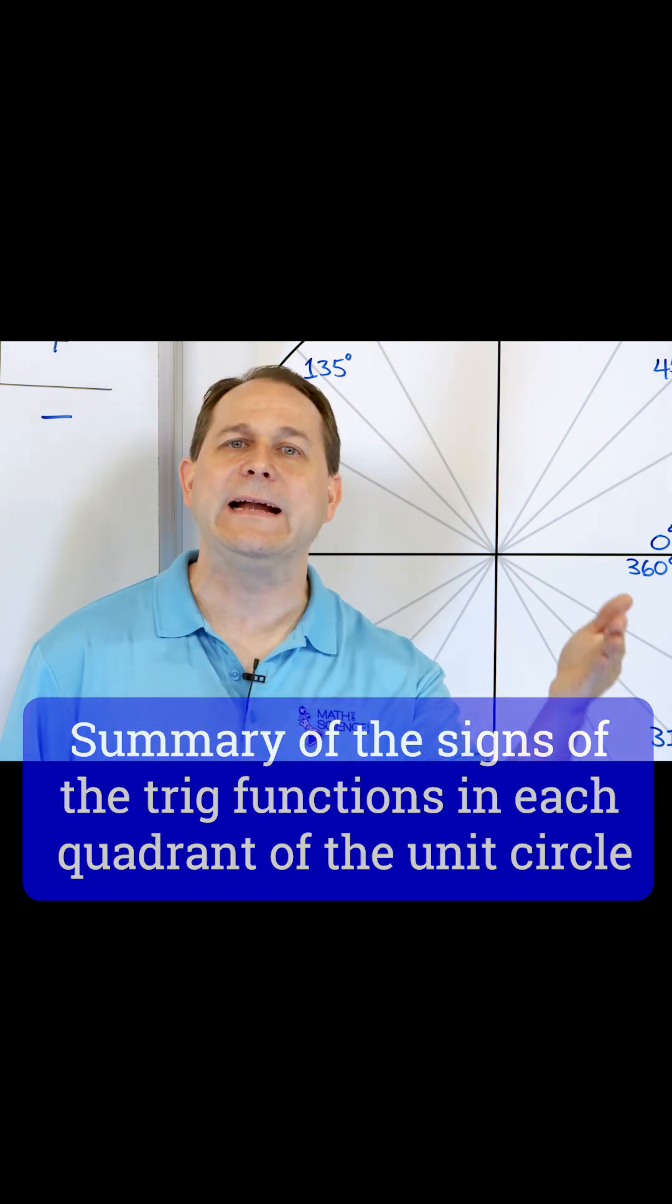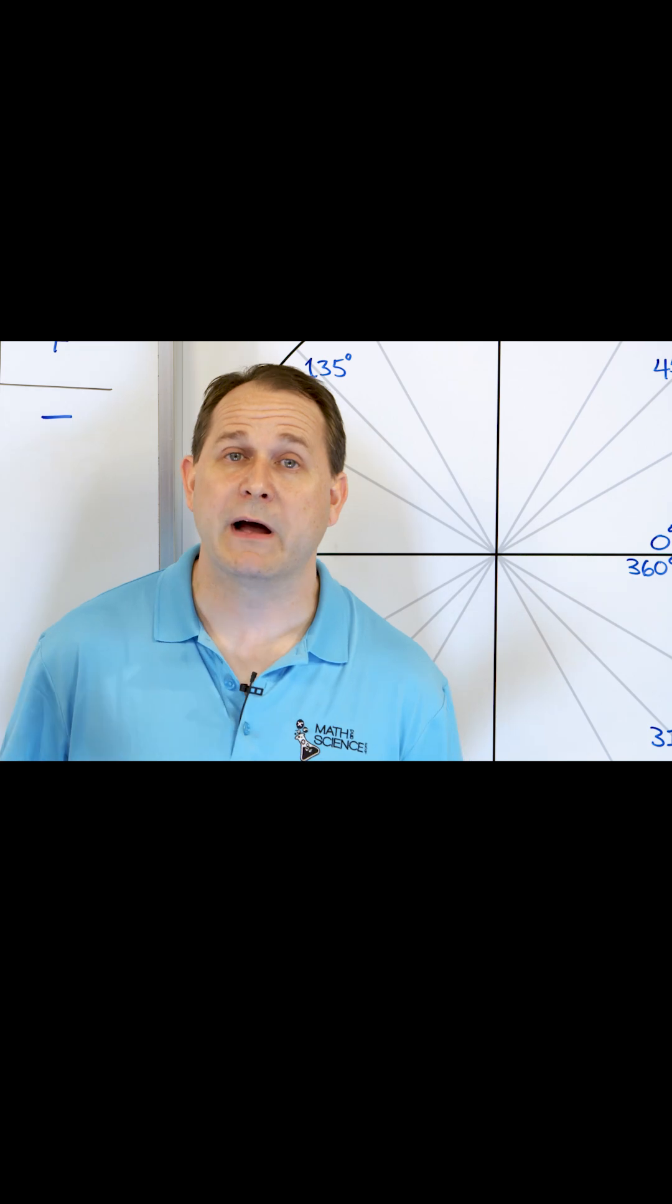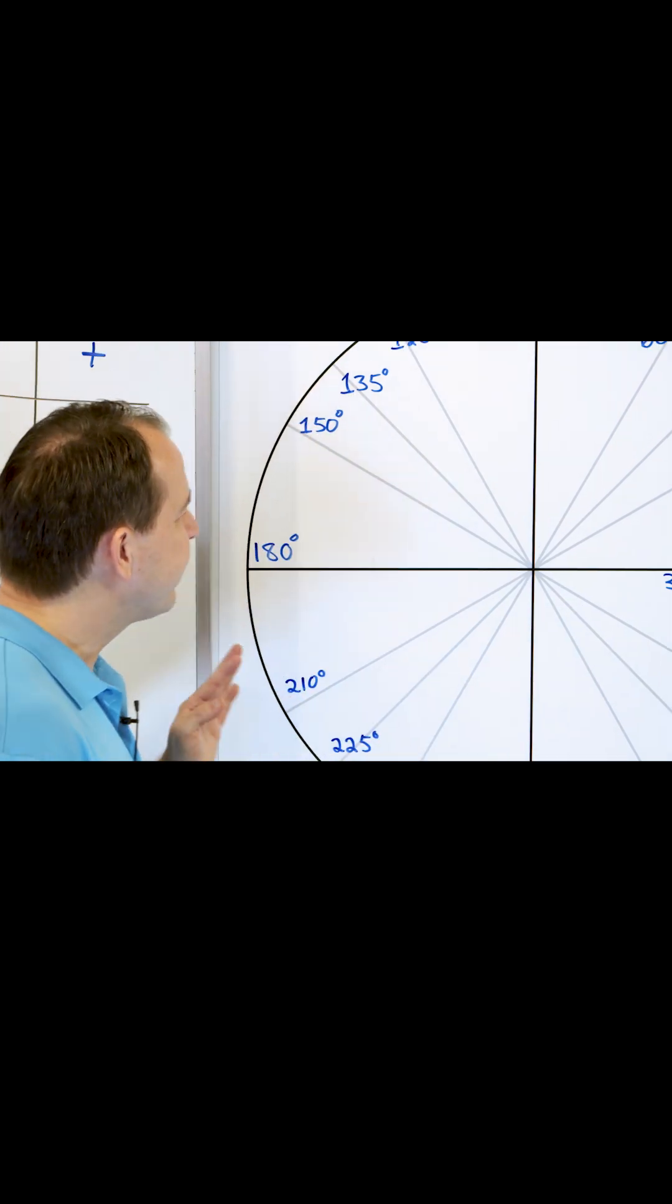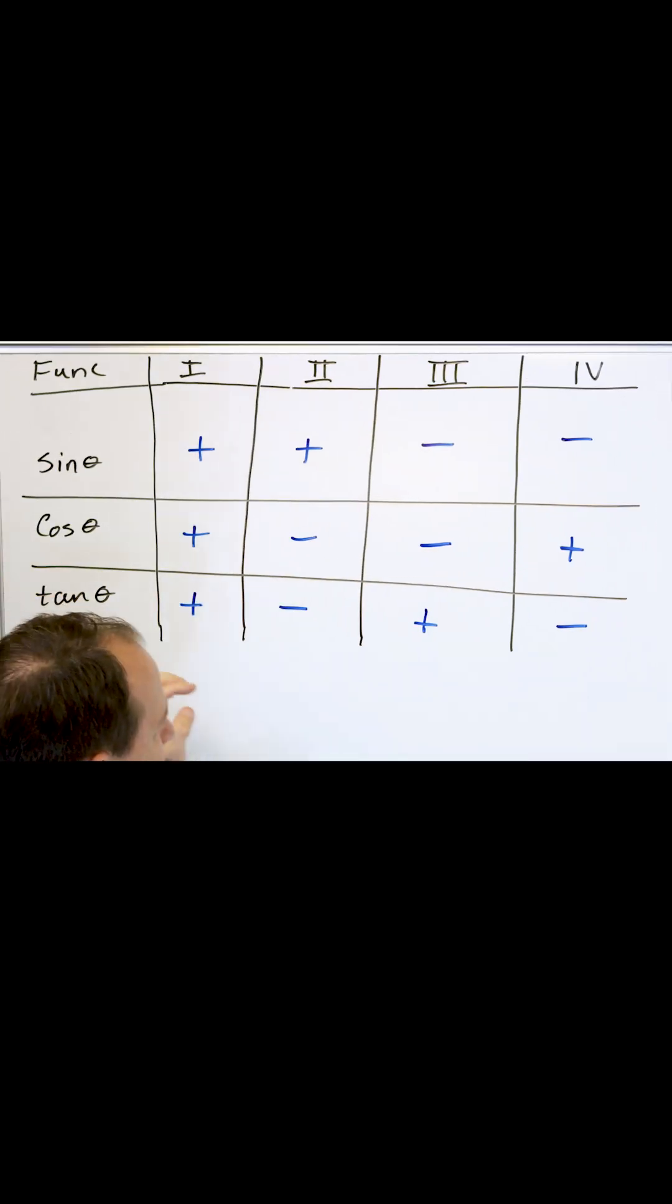To find the tangent, you're dividing the sine divided by the cosine, so the tangent can swing positive or negative as well. And there's also some other gotchas with tangent that we'll talk about.